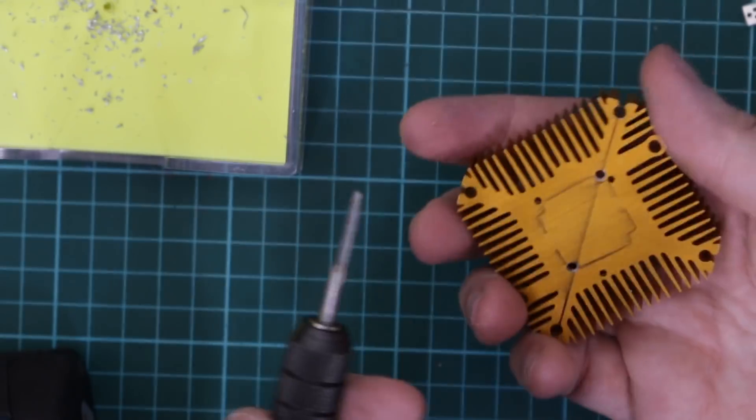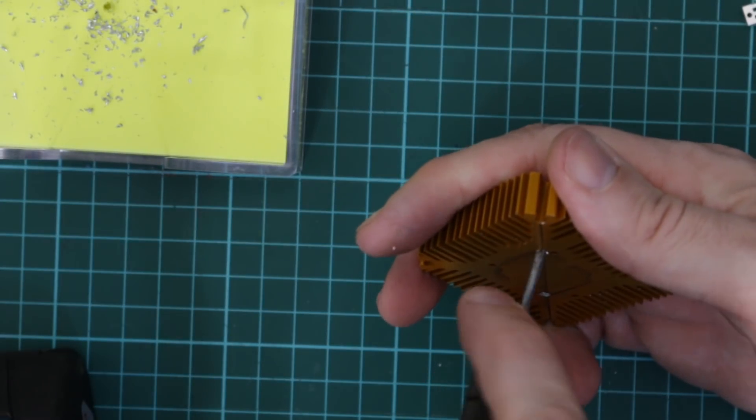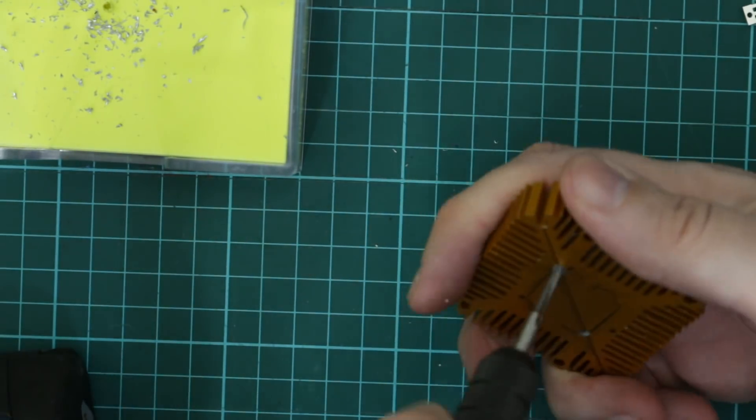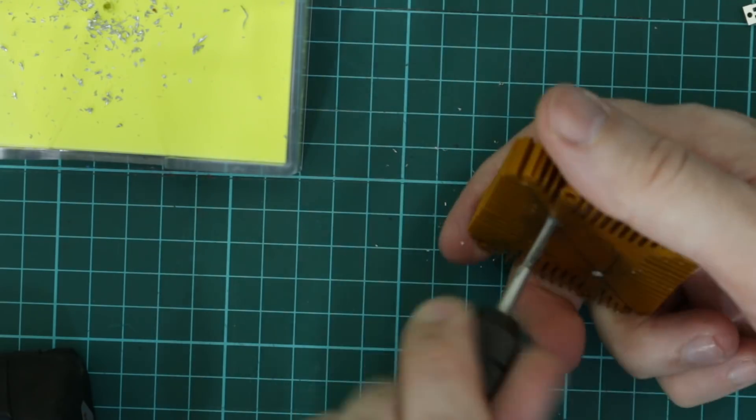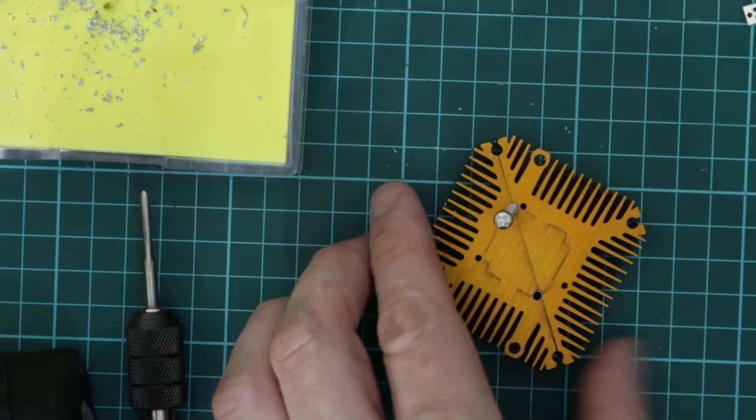So that should fit. Now I'm just going to take a three millimeter tap and just tap some threads into this aluminum. And I'll just repeat that for the other hole.